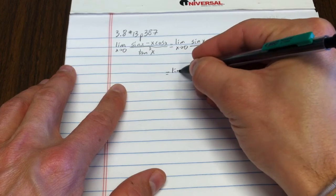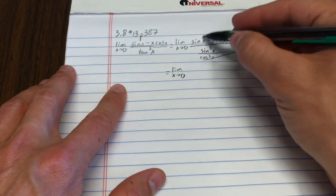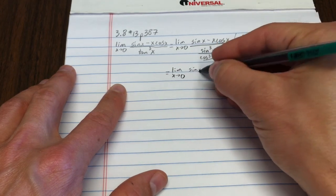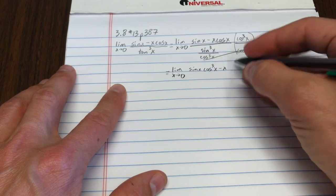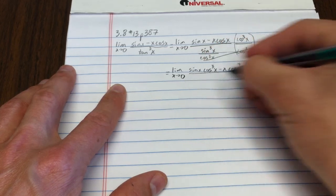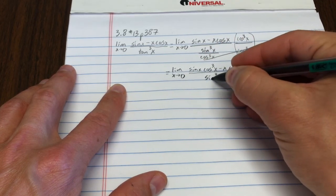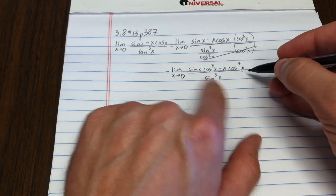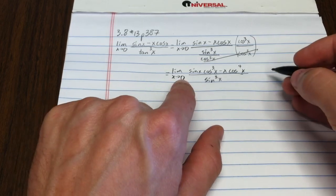Well, I'll end up with this times that, which is sine x cosine cubed x minus x cosine to the fourth x over sine cubed x. That might not look wonderful, but I know that the derivative for sine is a lot nicer than the derivative for tangent. Okay, now notice I'm still in an indeterminate form.